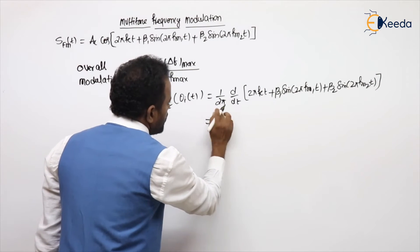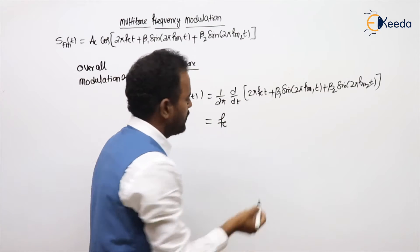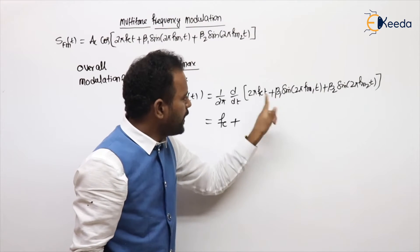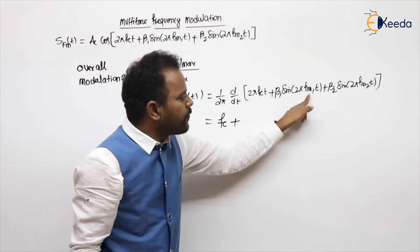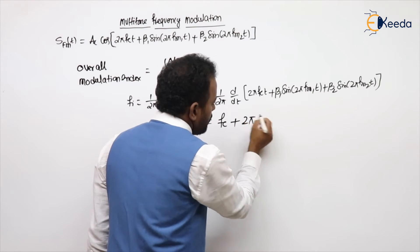Then see 2π, 2π gone. fc, d/dt of t is 1, plus differentiation of sine is cos. Anyhow β on outside, 2π fm1 multiplication factor will come. So 2π.